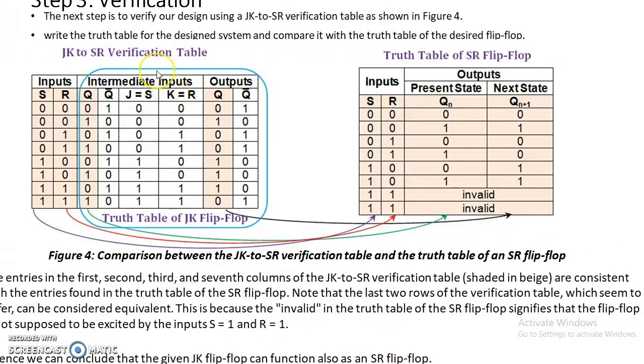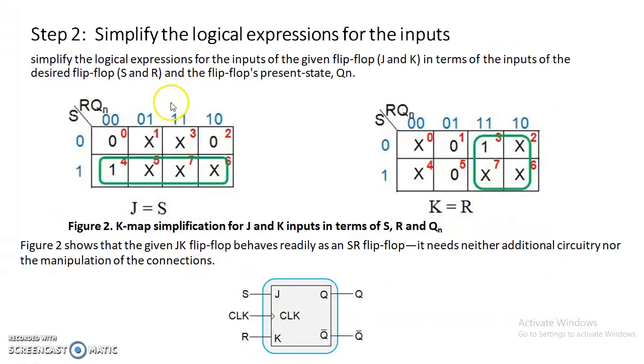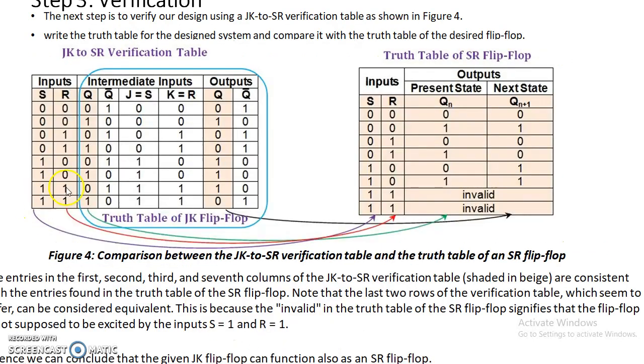Then let us verify. The last step is to verify whether our design, that is our JK, is behaving like an SR flip-flop. To verify that, we write a verification table. So JK to SR verification table and the truth table of an SR flip-flop.